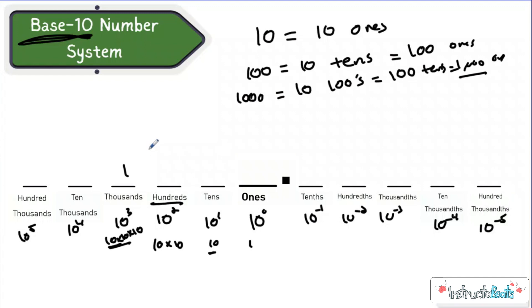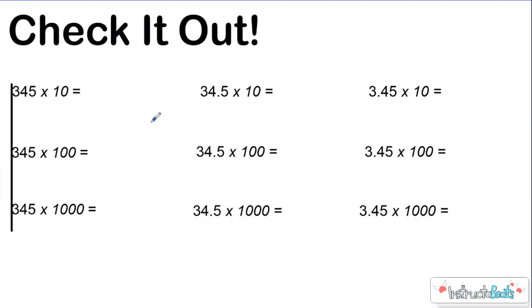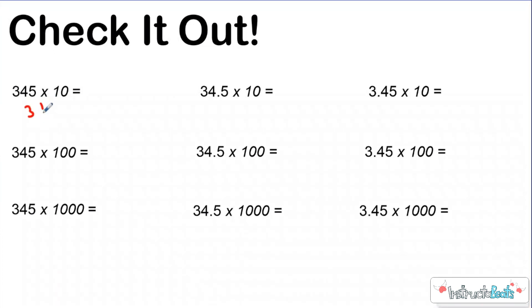Which makes multiplying and dividing by tens, hundreds, and thousands very easy. As you move a place value to the left, you're getting bigger times ten. So if I have three hundred forty-five times ten, I can just take three hundred forty-five and move it one place value to the left — which puts my three in the thousands place, my four in the hundreds place, my five in the tens place — and then I add a zero for three thousand four hundred fifty.